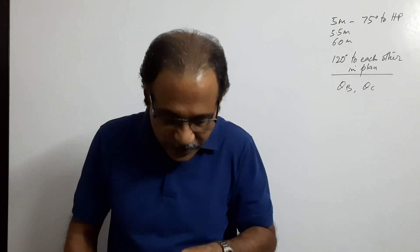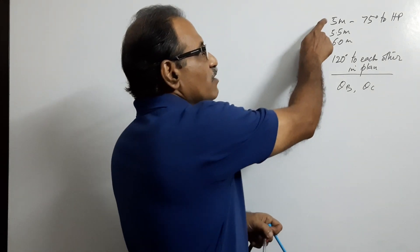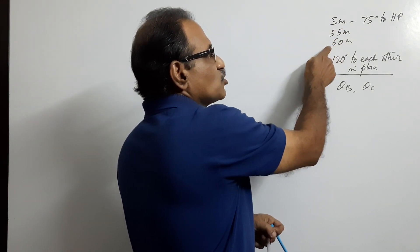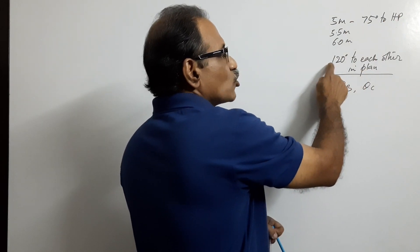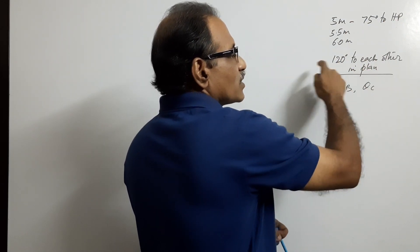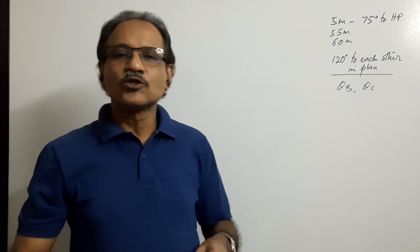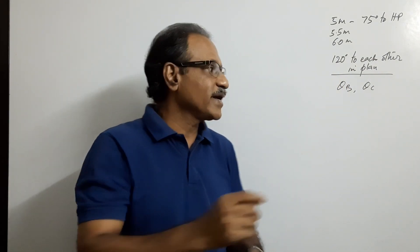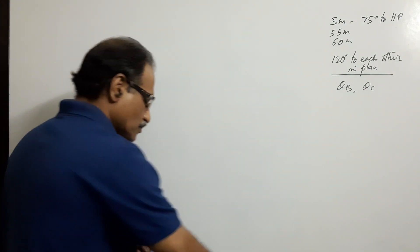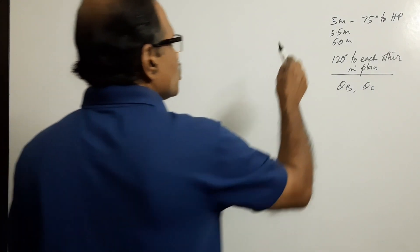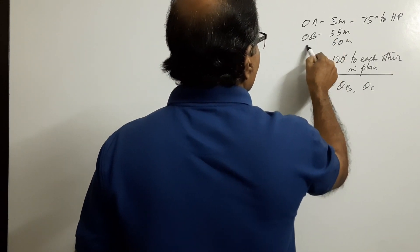When you look from the top, the three legs are at 120 degrees to each other. The 5-meter leg makes 75 degrees to the HP, and in the top view the legs appear at 120 degrees to each other. You are asked to draw the projections of the tripod stand and find theta B and theta C. Let us assume this is OA, this is OB, and this is OC.